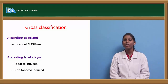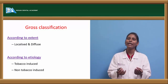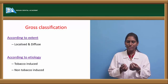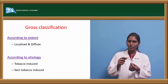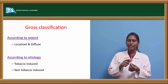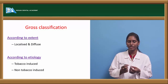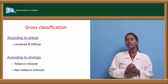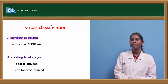Don't mistake hairy leukoplakia — don't think it will actually have hairs over it. It is just a name because of its peculiar corrugated surface, which appears like hair coming out. That is the reason it is called hairy leukoplakia.